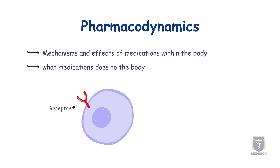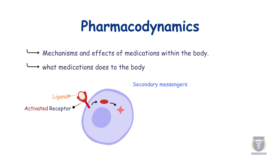Receptors are specialized proteins, both on the cell membrane and inside the cell, that can bind to a ligand. That ligand could be an agonist, which is a molecule that binds and activates a receptor. This means the receptor changes its shape or activity, giving rise to a signal cascade of intercellular molecules called second messengers.